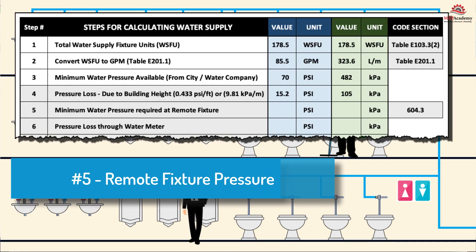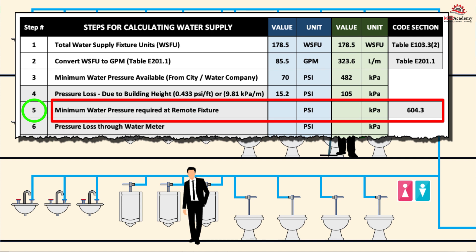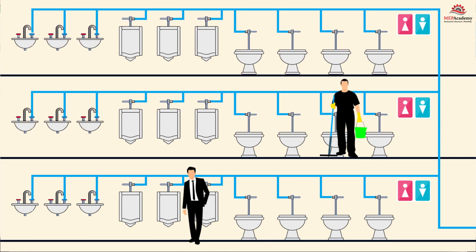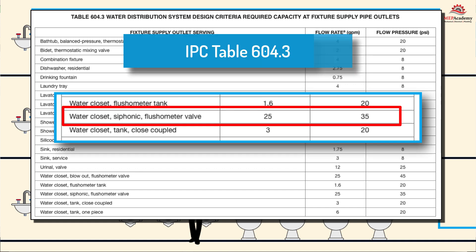Step 5: Minimum Pressure Required at Remote Fixture. This ensures the fixture has enough pressure to operate properly. Each fixture requires a different amount of pressure, so it's important to select the remote fixture with the greatest pressure requirement. Using IPC Table 604.3, the siphonic water closet with a flushometer valve requires 35 PSI or 241 kPa for proper operation.